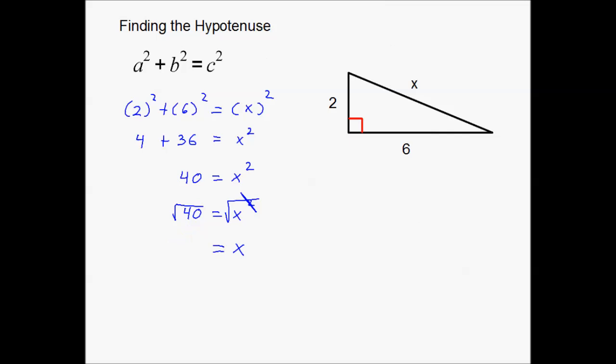Instead, I'm going to split this up into the square root of 4 times the square root of 10. 10 times 4 gives me back 40. The reason I split it that way is because the square root of 4 I actually know — that reduces to 2. The square root of 10 I don't know, so I leave it as the square root of 10. So the square root of 40 simplifies to 2 times the square root of 10. The number underneath the radical is now smaller — that's why we call it simplifying the radical.